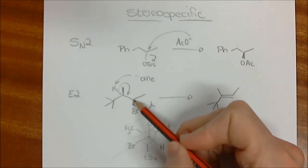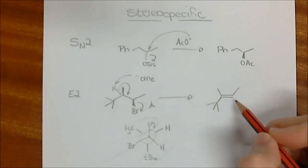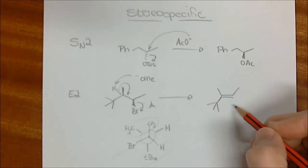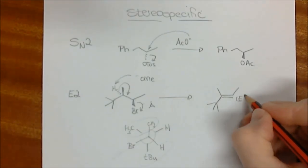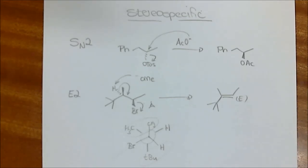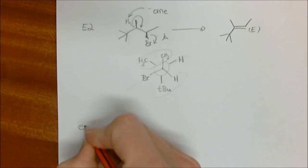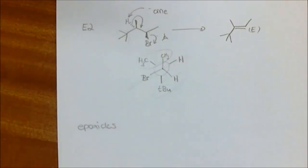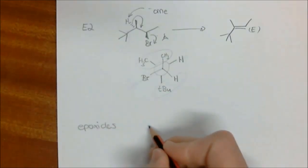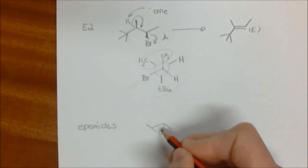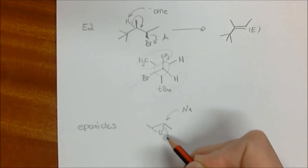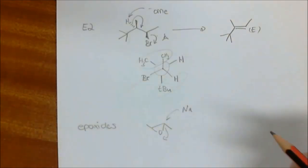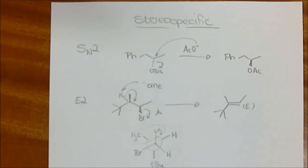The chirality of the leaving group and the chirality of the adjacent carbon inform the reaction so that only this specific product is obtained. One more example we've recently covered is epoxides. Epoxides are stereospecific because when the nucleophile comes in, it must come from the opposite side of the epoxide — very similar to the SN2 reaction. That's how those reactions must work.